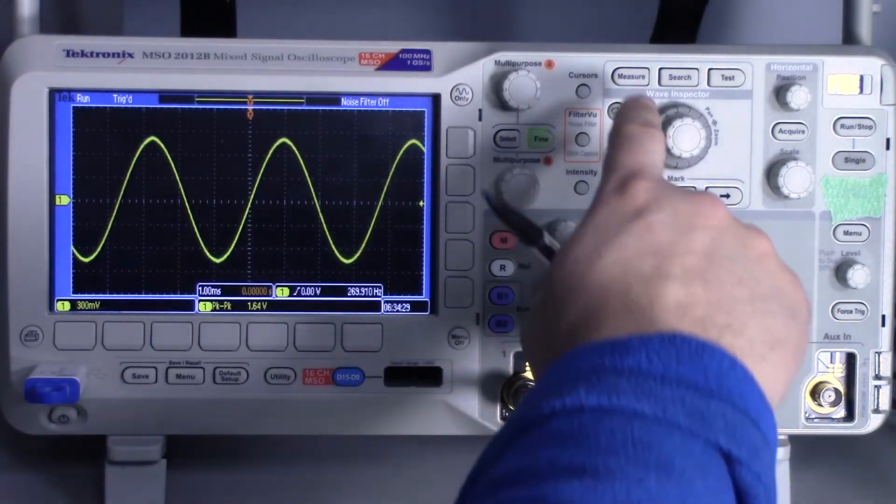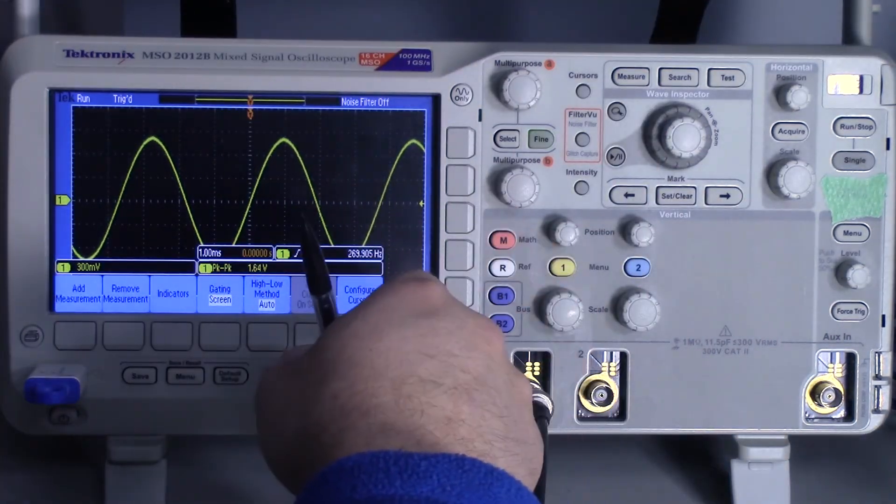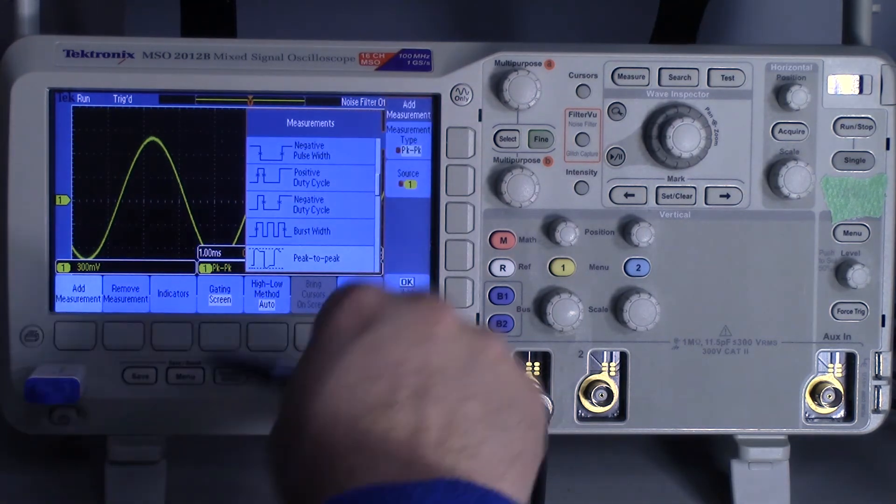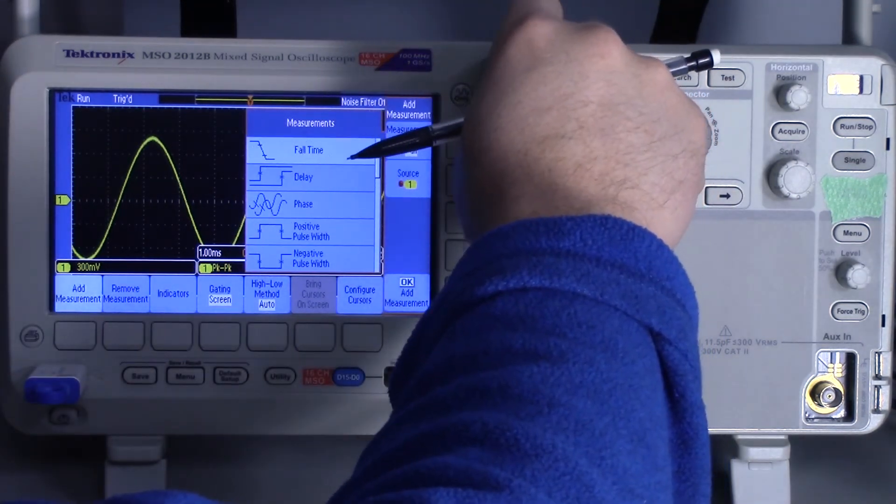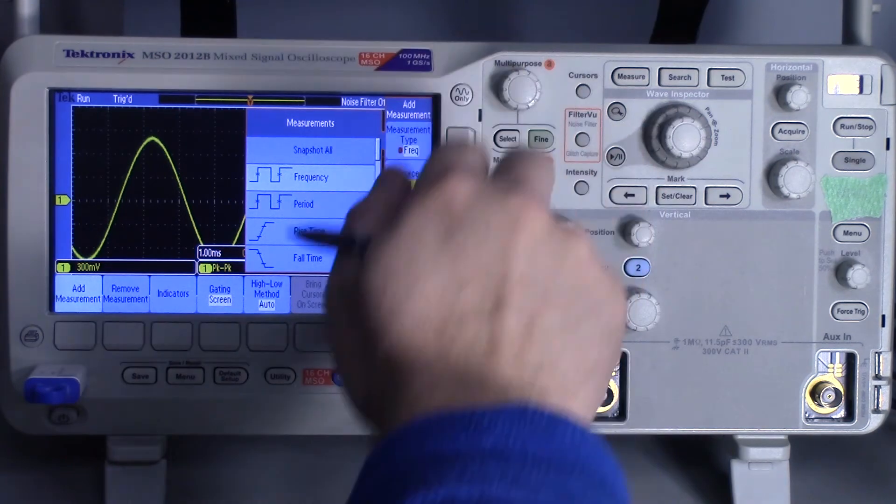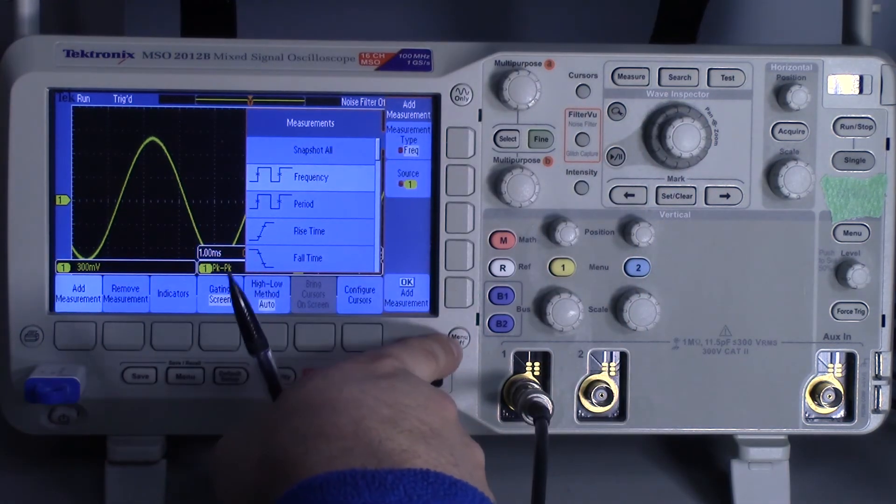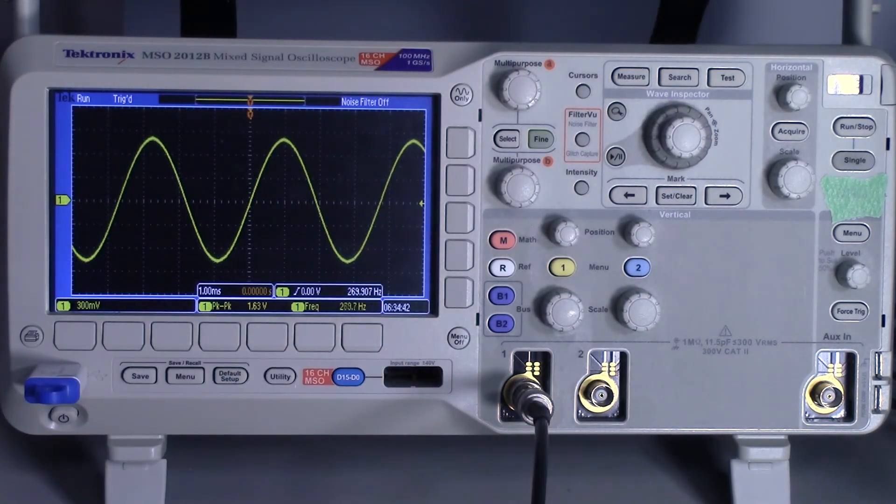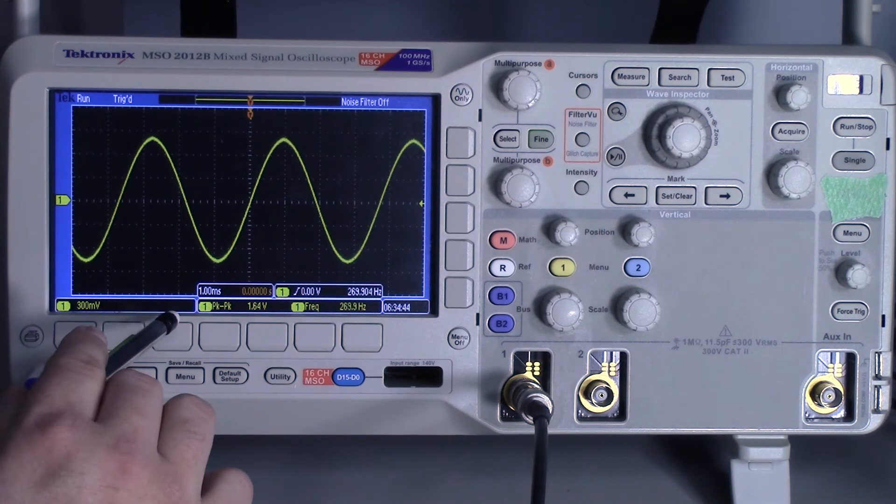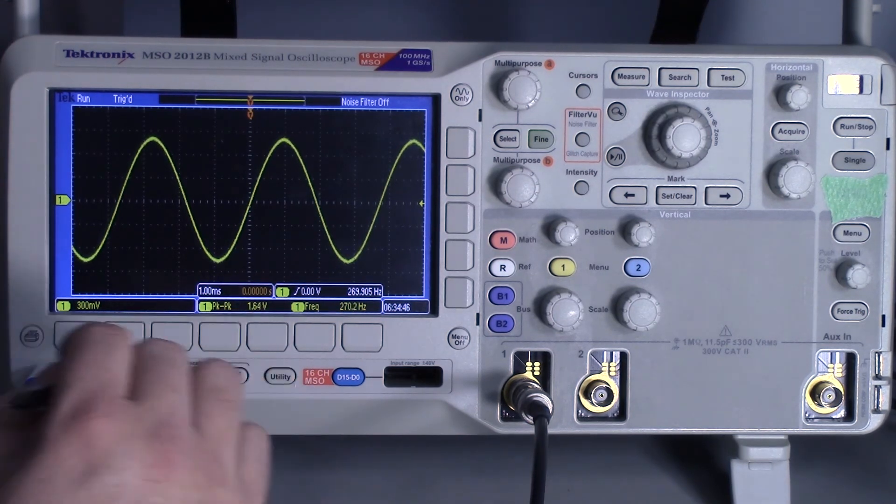And if I also want to measure the frequency, I can add measurement. And the frequency was up towards the top. Frequency, add, and there we go. So now I have the machine doing the work for me.